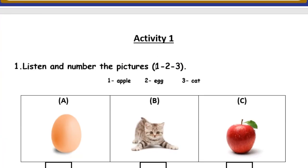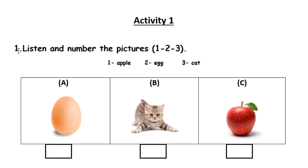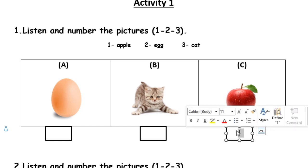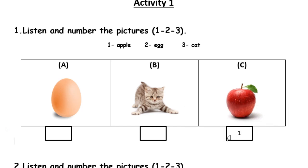Let's go to activity number 1 and begin our revision. Question 1: Listen and number the pictures 1, 2, 3. So here what we need to do is write the numbers 1, 2, 3. Number 1 is Apple, Apple, Apple. This is Apple C. So we need to write 1 here.